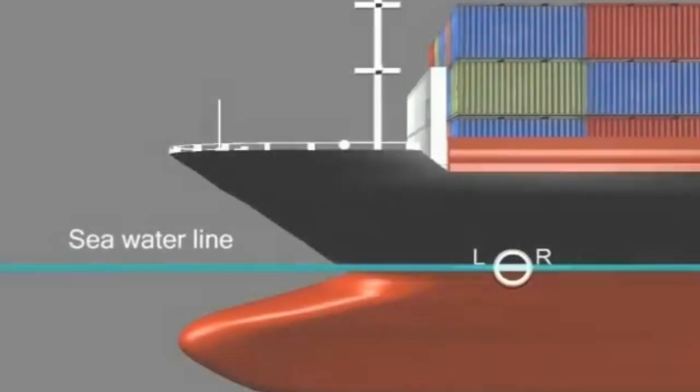Once having understood that oceans are of different density, each having a safe load line, it is time to understand how to read the lines. The circular symbol with the line passing directly is the Plimsoll line.